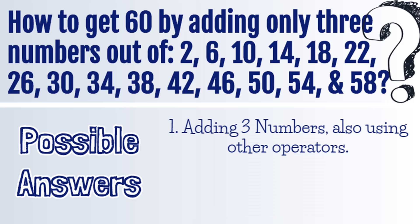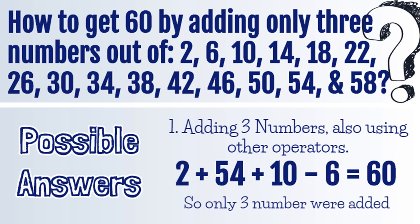We will take three numbers and add them: 2 plus 54 plus 10. Then we will use the minus operator and subtract 6 from these numbers. Our equation becomes 2 plus 54 plus 10 minus 6, which gives you 60.